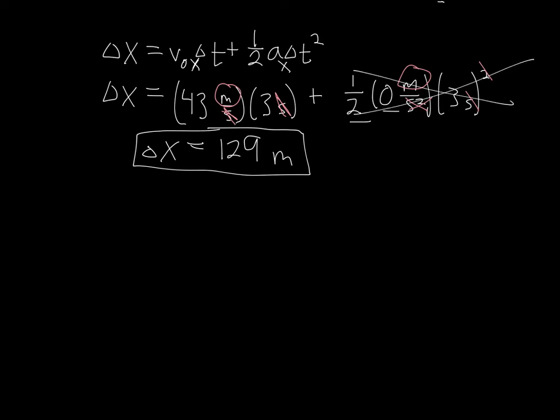I can do the same thing with the y direction. So I just write the same kinematic equation. Just anywhere I had an x, I replace it with a y. So change in y is equal to v₀ of y times change in time, plus one half times aᵧ times a change in time squared.